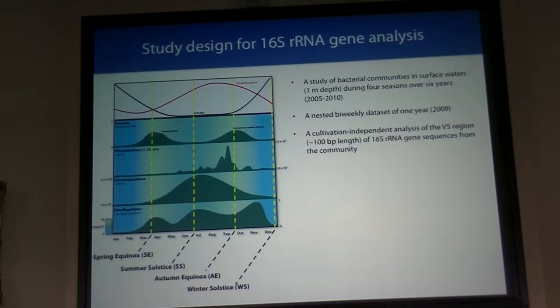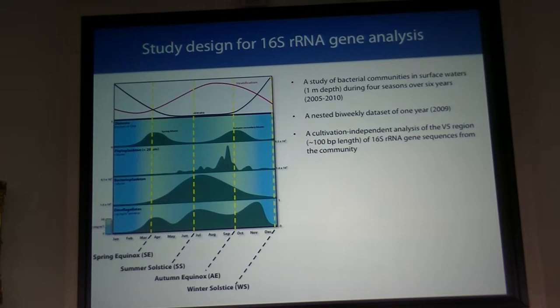This is the study design. We're interested in long-term inter-annual variability in bacterioplankton communities and also short-term variability — how quickly communities change over time. We have a nested study where we selected samples from the archive corresponding to the spring equinox, summer solstice, autumn equinox, and winter solstice, sequenced over a six-year period from 2005 to 2010. In addition, we have a nested bi-weekly dataset over 2009 to get an idea of how quickly these microbes are changing.